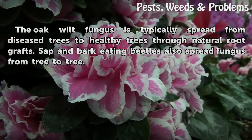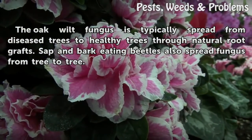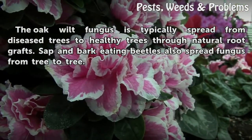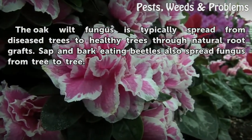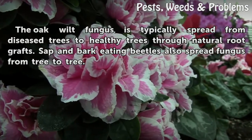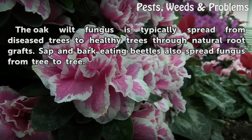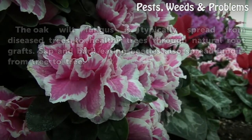The oak wilt fungus is typically spread from diseased trees to healthy trees through natural root grafts. Sap and bark-eating beetles also spread the fungus from tree to tree.